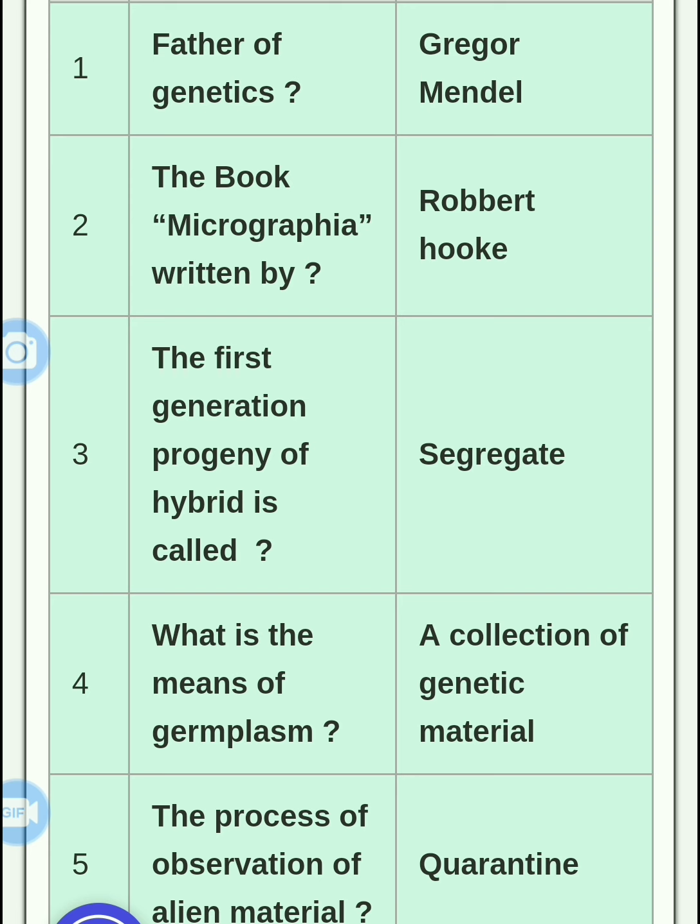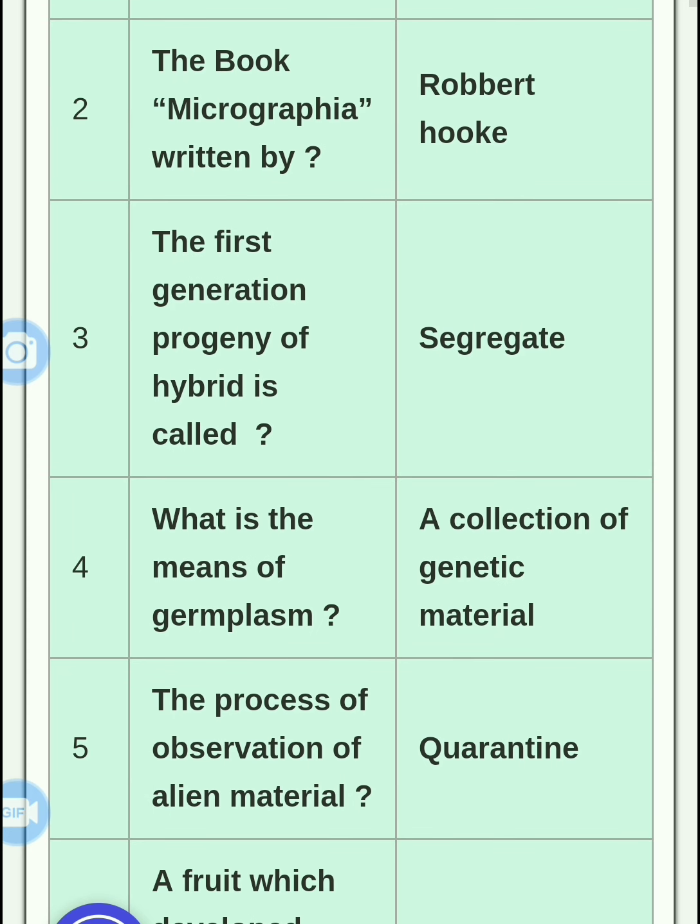Third question: the first generation progeny of a hybrid is called — when we do a hybrid seed production program, the first progeny is produced.